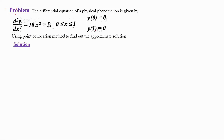We are going to see a problem in finite element analysis. The differential equation of a physical phenomenon is given by d²y/dx² minus 10x² equal to 5. The limit is 0 ≤ x ≤ 1. The boundary conditions are y(0) = 0 and y(1) = 0.